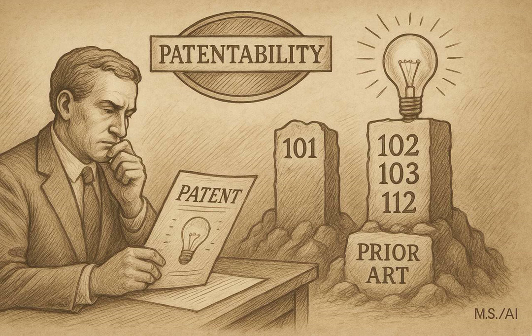Think of it like the main checklist: does the invention even qualify for patent protection? Our goal today is to unpack the main points from Chapter 2100, give you a solid handle on what examiners are looking for without you having to read the whole dense chapter yourself. We'll be talking about four key statutes: Sections 101, 102, 103, and 112 of U.S. patent law.